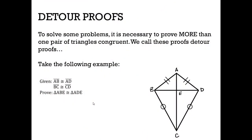Let's get right into the detour proofs first. To solve some problems, it is necessary to prove more than one pair of triangles congruent. We call these proofs detour proofs. Let's look at the following example.